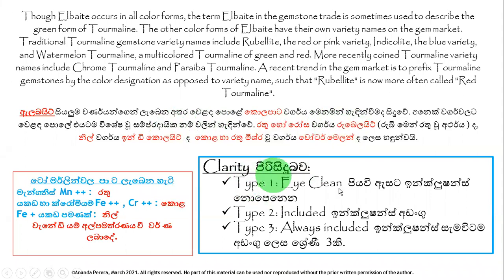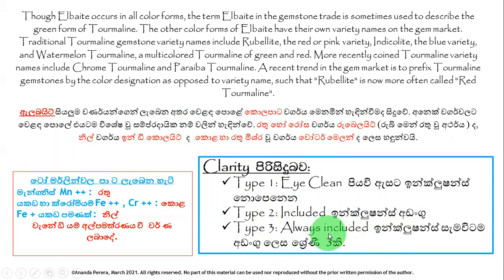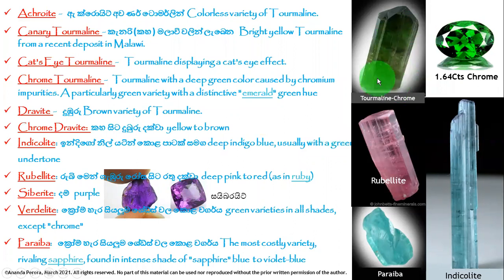The clarity of tourmaline has three types: Type 1, Type 2, Type 3. Type 1 is the highest grade. Type 2 and Type 3 are also included. If you want the highest quality, type 2 and type 3 grades apply. Chrome tourmaline falls in this classification.